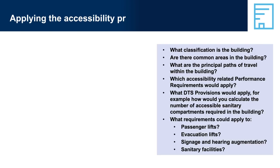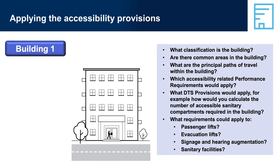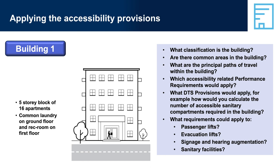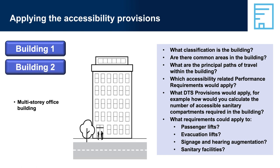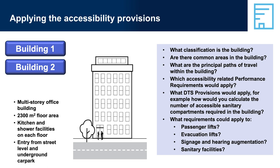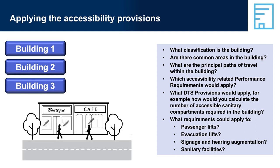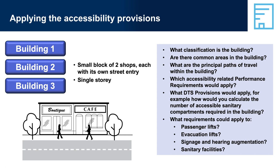Applying the accessibility provisions. Building 1: Apartment building — 5-storey block with 16 apartments, common laundry on ground floor and rec room on first floor, front entry higher than the street, re-entry at ground level. Building 2: Office building — multi-storey office building, 2,300 square metres floor area, kitchen and shower facilities on each floor, entry level from street level and underground car park. Building 3: Block of two shops — small block of two shops, each with its own street entry, single storey.